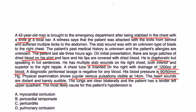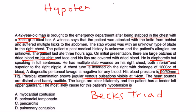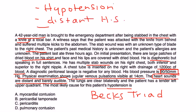Heart sounds are distant and barely audible. Jugular venous pulsation is visible at 14 centimeters. The question asks: most likely cause for this patient's hypotension? This patient has Beck's triad: hypotension, distant heart sounds, and jugular venous distension. Don't just memorize it — go back to the diagram and understand why each happens. This is cardiac tamponade, sometimes called pericardial tamponade because the blood is in the pericardial sac.